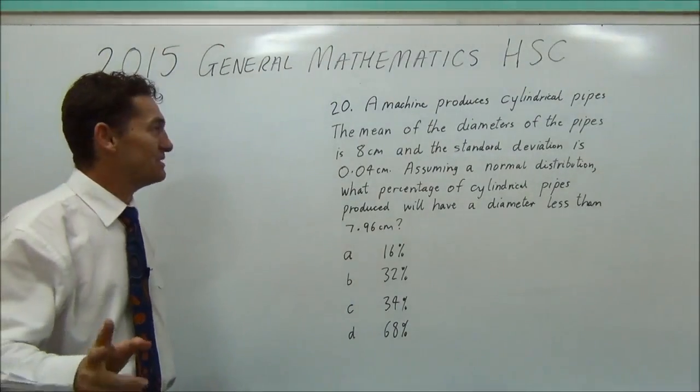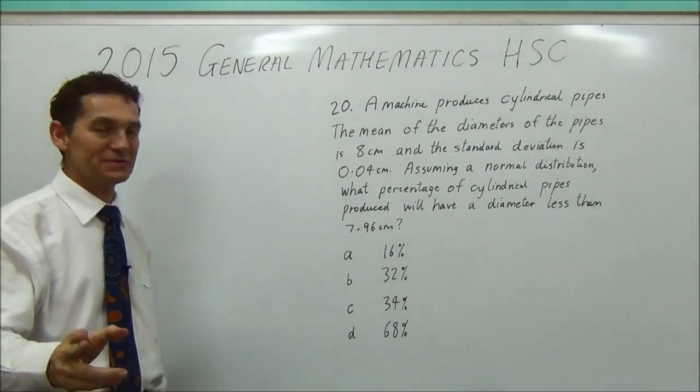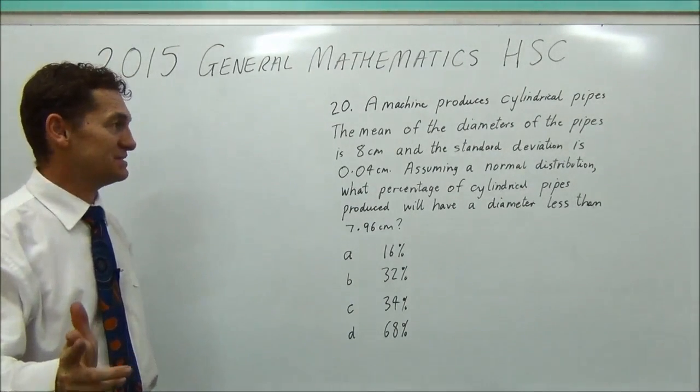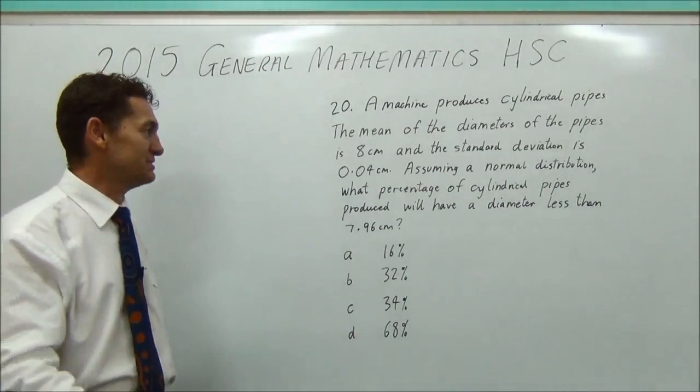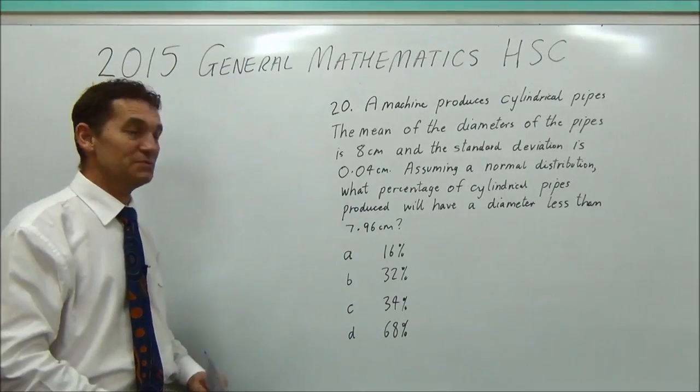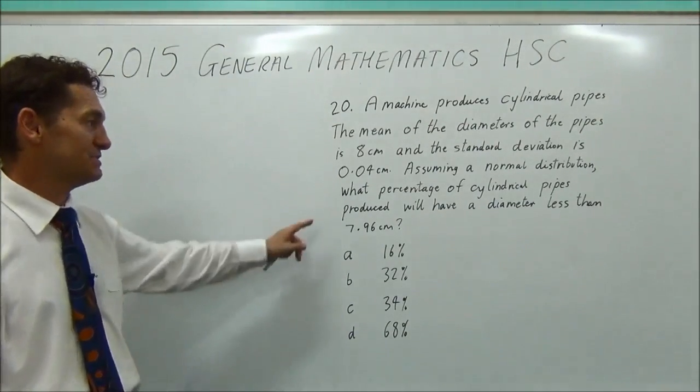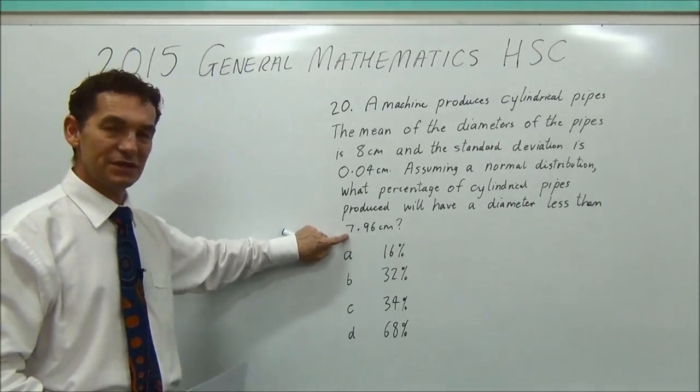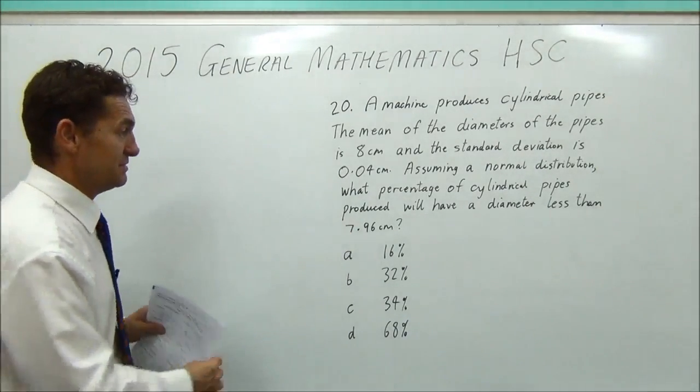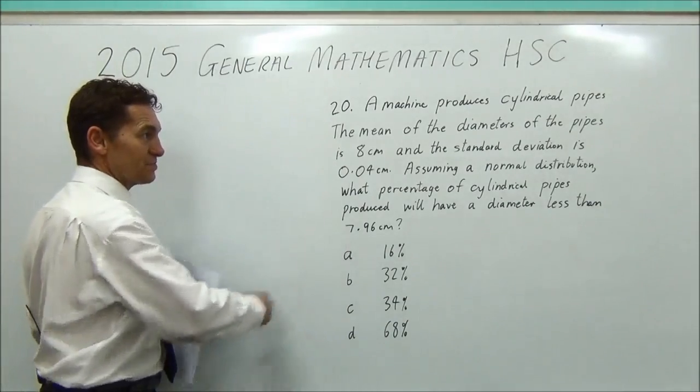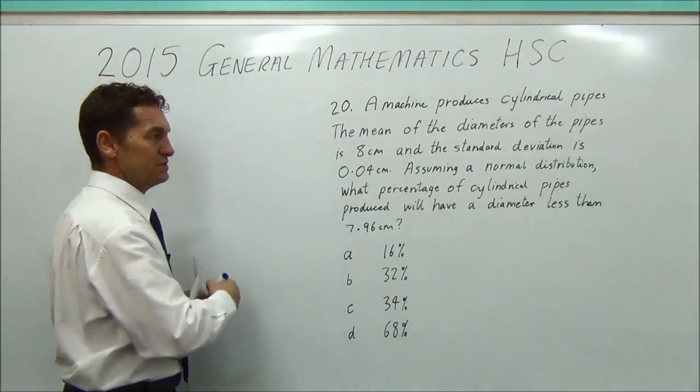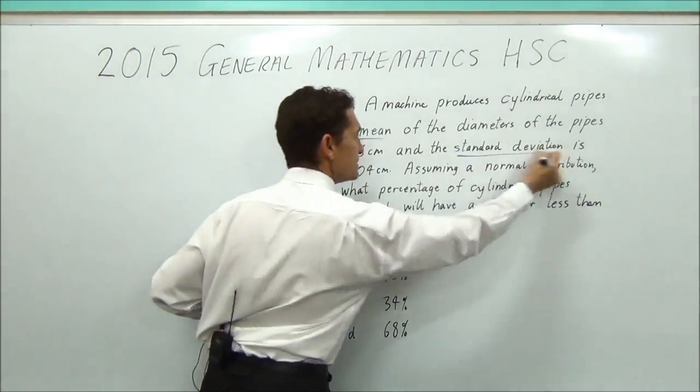Question 20. A machine produces cylindrical pipes. The mean of the diameters of the pipes is 8 centimetres and the standard deviation is 0.04. Assuming a normal distribution, what percentage of confidence will have a diameter less than 7.96? That's what we're looking at.